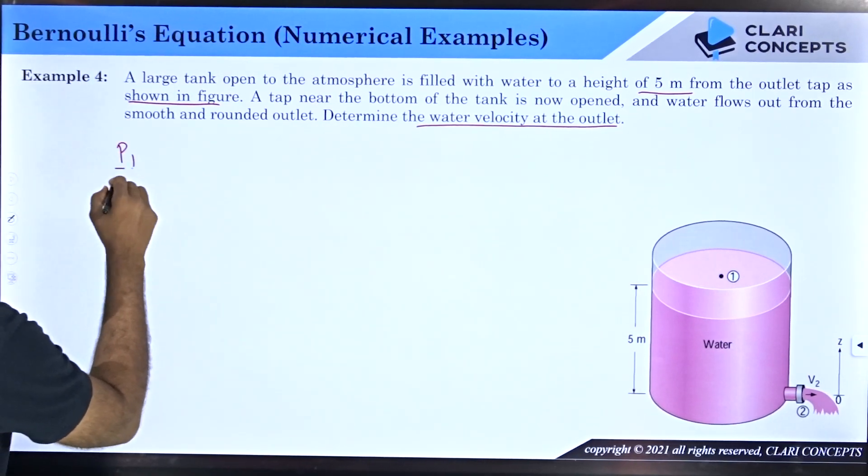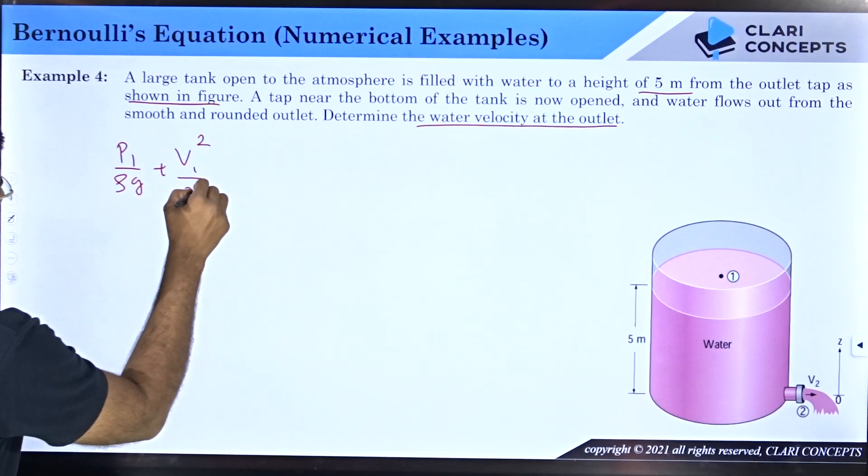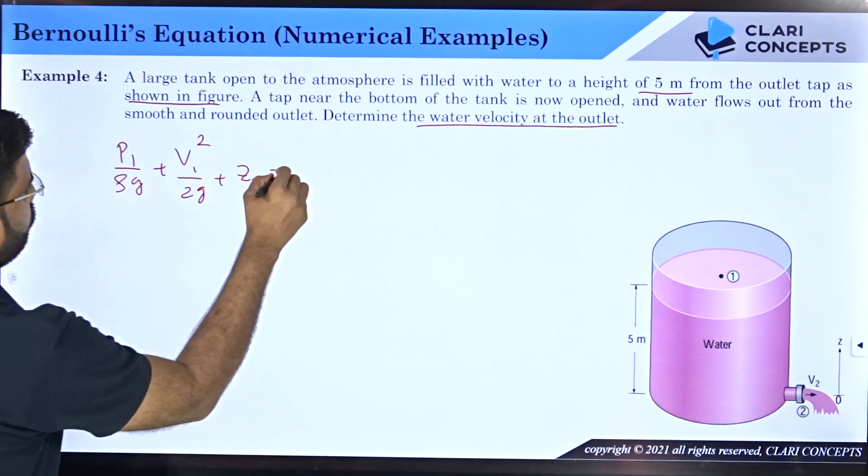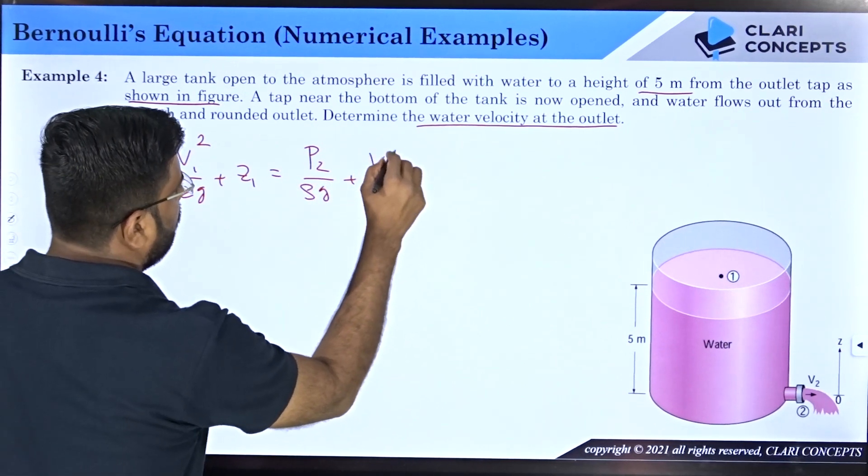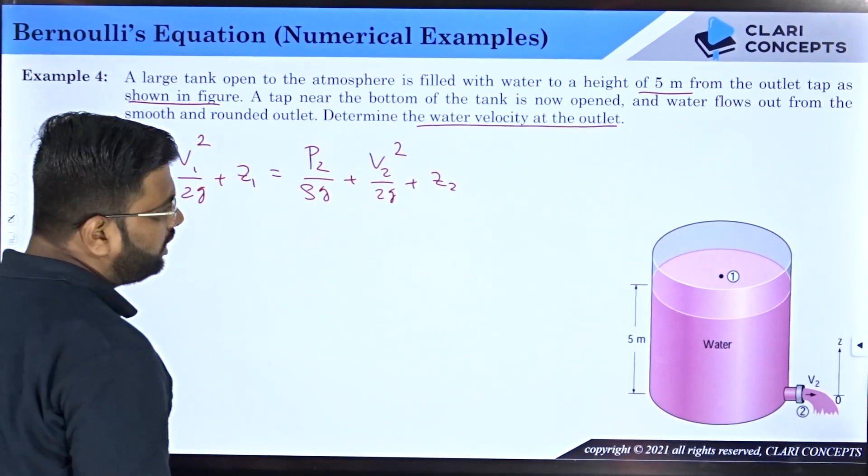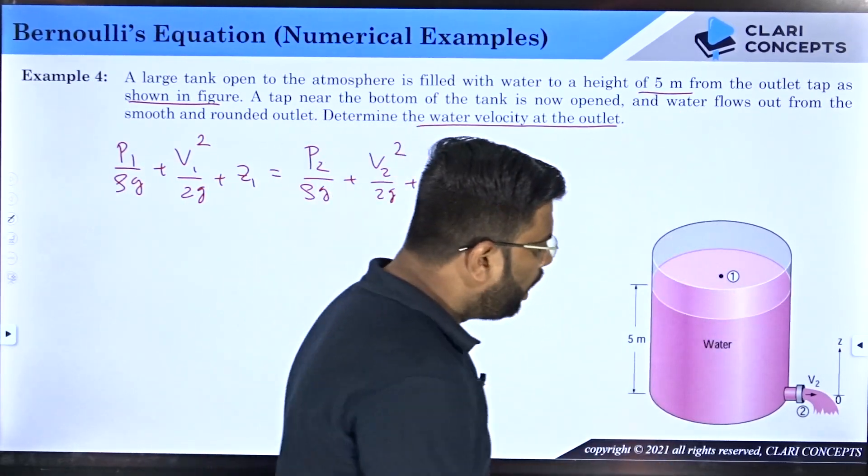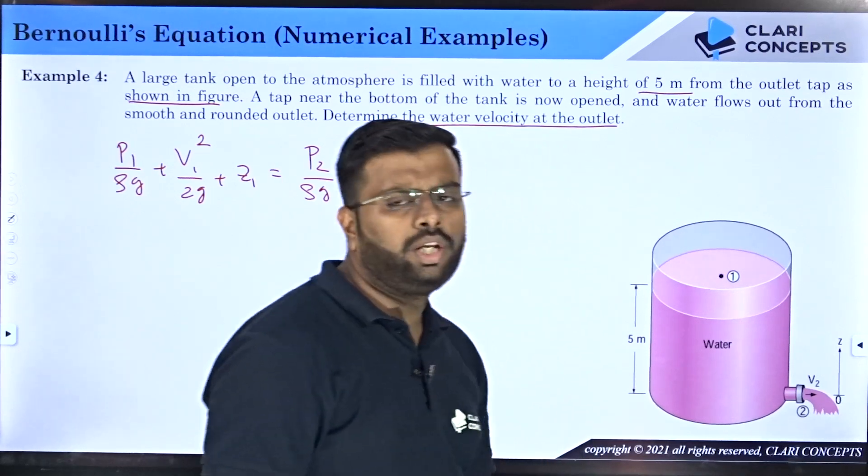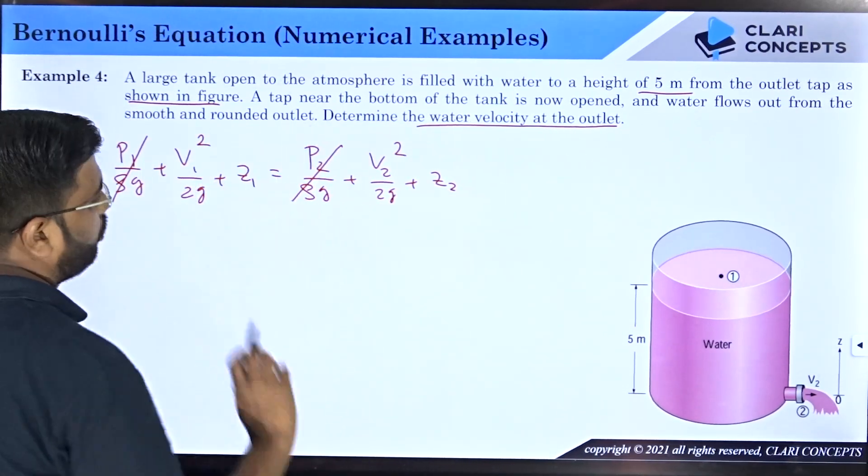p1/(ρg) + v1²/(2g) + z1 = p2/(ρg) + v2²/(2g) + z2. Let us see what all things are given to us. p1: pressure is atmospheric because the point is open to atmosphere. Also p2: pressure is atmospheric, point is open to atmosphere. You can say both of them are canceled or they are going to zero.